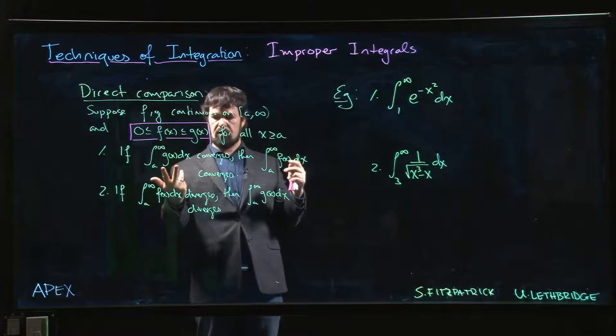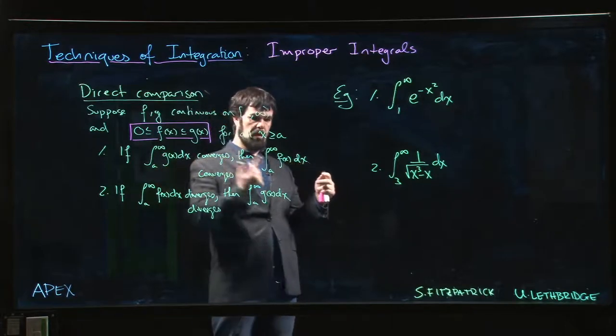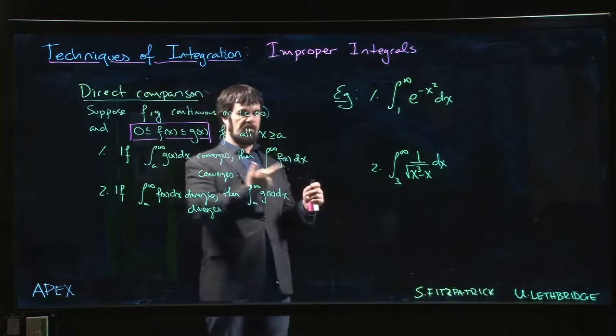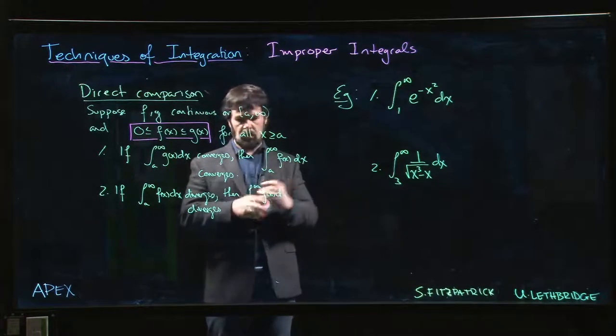Then essentially via like a squeeze theorem type argument, if this one converges, if this value is finite, well, this value has to be somewhere between 0 and the integral for g(x), so it must also be finite. So it has to also converge.